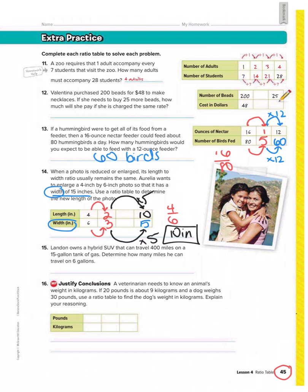Okay, let's do number 16. A veterinarian needs to know an animal's weight in kilograms. If 20 pounds is about 9 kilograms and a dog weighs 30 pounds, use a ratio table to find the dog's weight in kilograms.